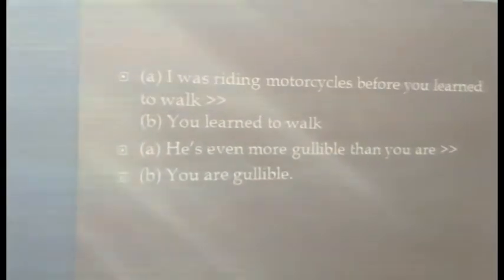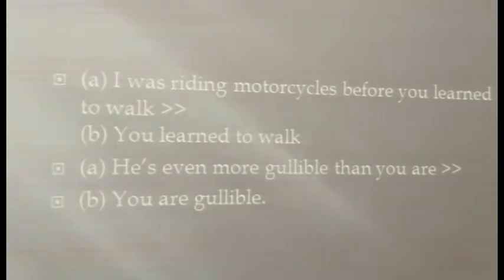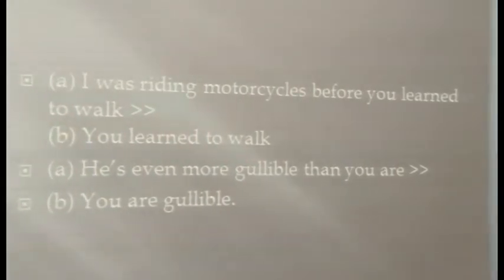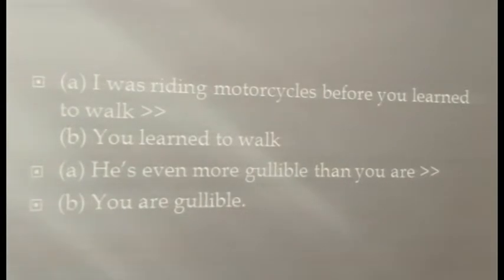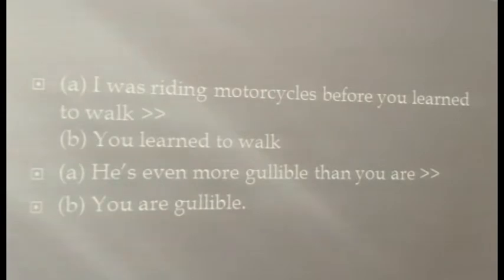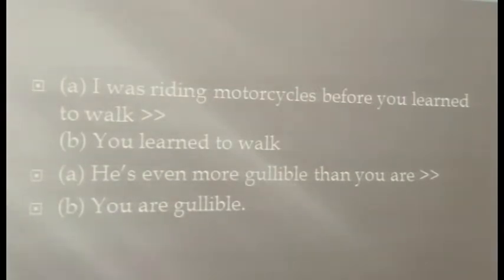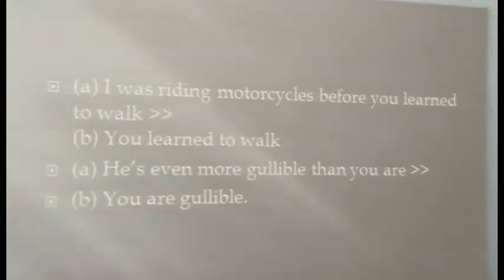What kind of sentence is 'I was riding motorcycles before you learned to walk'? This is a complex sentence. Functionally, it signals time and value through the conjunction 'before.' 'I was riding motorcycles' is the main clause, followed by the subordinate clause 'before you learned to walk.' The presupposition is embedded in the subordinate clause 'before you learned to walk.'